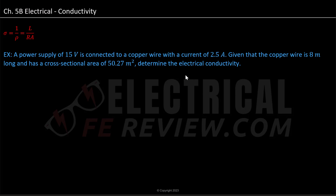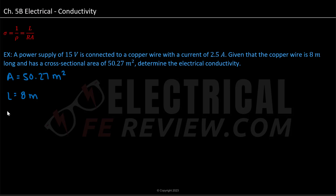First we can identify what the question is asking us — in this case, electrical conductivity — and we do not need to rearrange our formula. Let's note our given information. Our cross-sectional area, variable A, is equal to 50.27 meters squared. The copper wire is 8 meters long, so L equals 8 meters. We aren't given resistance R directly, but we are given the power supply and current: current I is equal to 2.5 amps, and voltage V is equal to 15 volts.